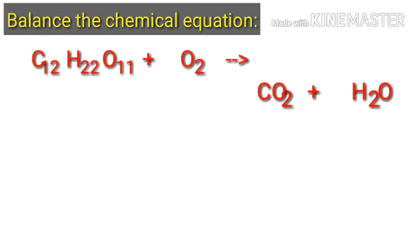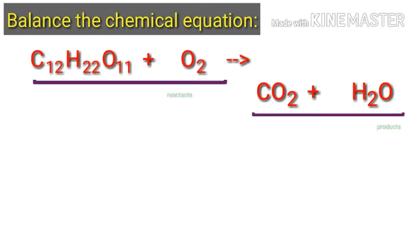Balance the chemical equation. Let's take a look at this equation representing a chemical reaction. In this equation, the reactants are sucrose and oxygen and the products are carbon dioxide and water.